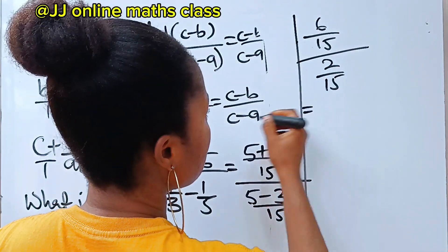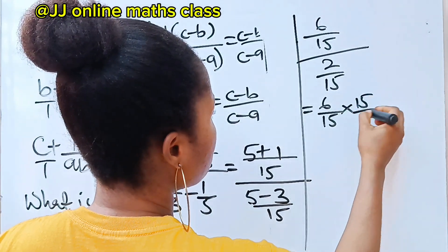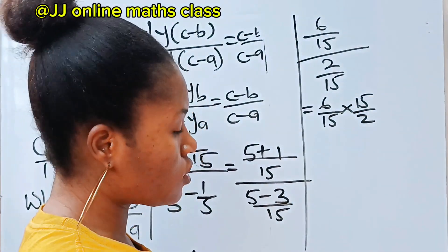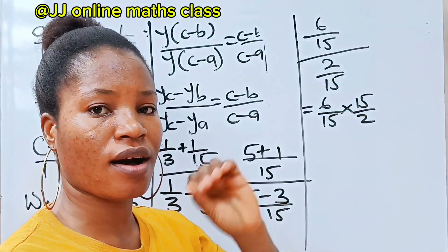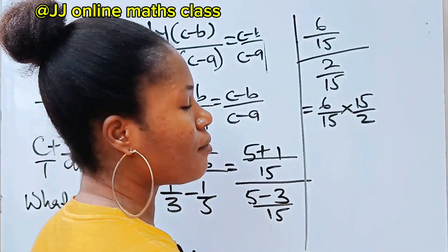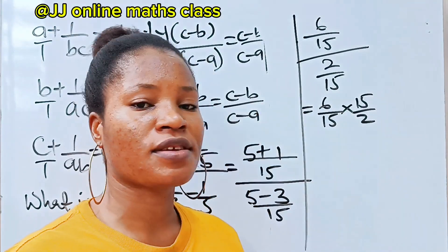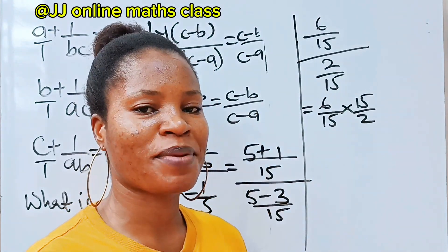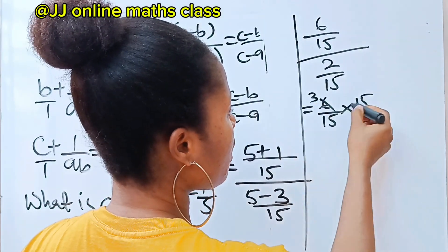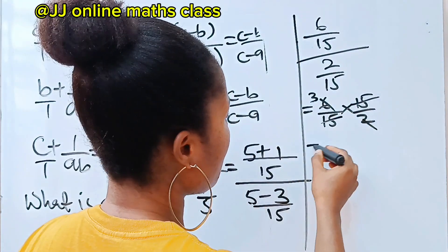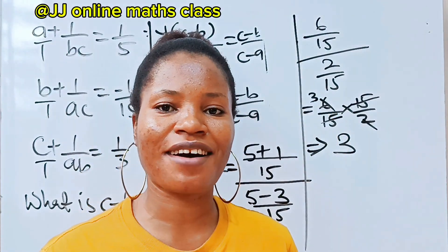This equals 6 over 15 multiplied by 15 over 2. 2 divides 6 to give 3, and 15 divides 15 to give 1. Your final answer is 3. Please subscribe and turn on your notification bell if this is the first time you are coming across this page. Thank you so much for watching. Have a lovely day.